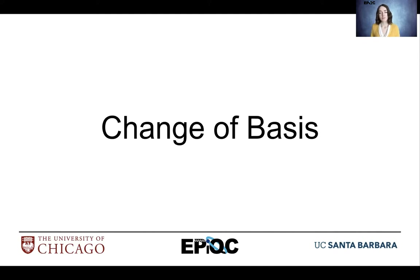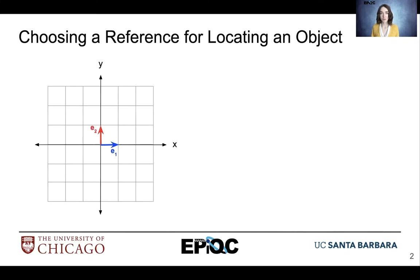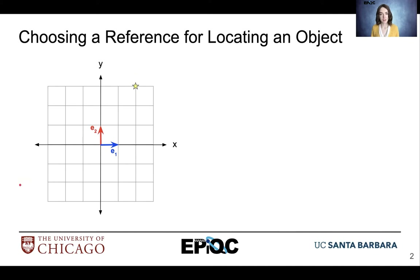We've talked about different coordinate systems, and now we're going to talk about moving around spaces with different basis vectors. Let's talk about choosing a reference point for locating an object in space. Here's our xy plane, and we are going to try to locate this star using e1 and e2 as our way to locate that star.